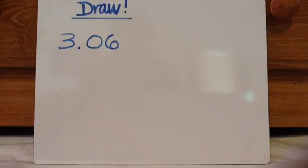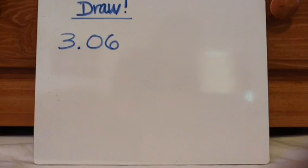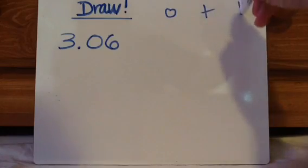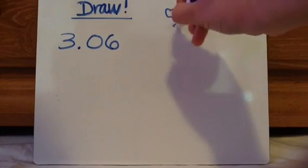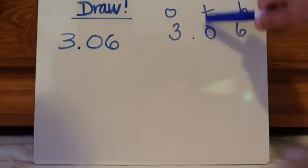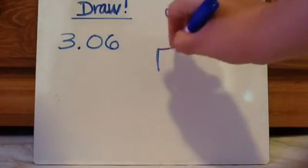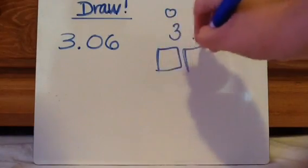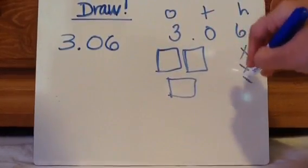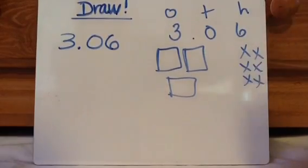Here's another one to practice — 3 and 6 hundredths. Press pause, draw, and press play when you're ready to check. So: ones, tenths, hundredths — 3 and 6 hundredths. Notice I have nothing in the tenths place, so it's 3 ones and 6 hundredths.